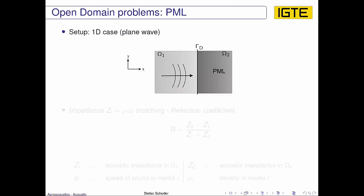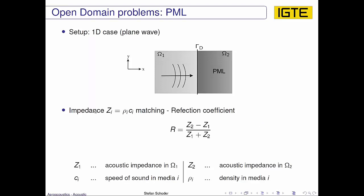In the one-dimensional case, as we had it for the ABC, we assume plane wave and we would like to have impedance matching. We already defined the acoustic impedance in the previous video. So the impedance matching means that at the interface Γd, we have no reflection, that the reflection coefficient is zero and the two acoustic impedances of Ω1 and Ω2 at the interface Γd match. So in this sense, are equal.